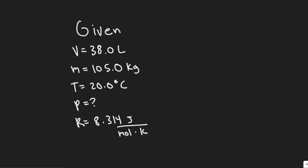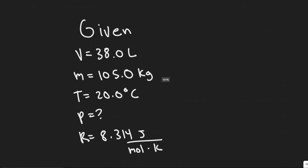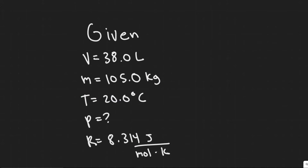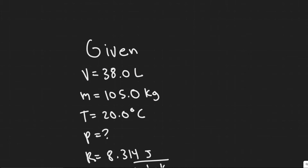In this problem we're told: what is the pressure inside a 38 liter container holding 105 kilograms of argon gas at 20 degrees Celsius? So we're going to be solving for the pressure. We're given the temperature, which is 20 degrees Celsius, the mass of argon, which is 105 kilograms, and the volume of the container, which is 38 liters.